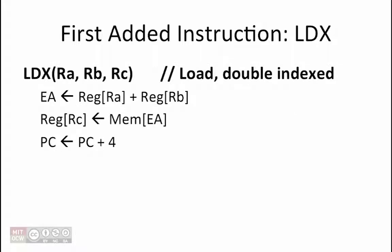The first instruction that we want to add to our beta is an LDX instruction, which is a load that is double indexed. In order to produce the effective address of the load, instead of adding the contents of a register to a constant as is done in the load instruction, we add the contents of two different registers. So the address for this load operation is the result of adding together the contents of registers RA and RB. The contents of the memory location pointed to by this effective address are loaded into register RC. Finally, the PC is incremented by 4 to point to the next instruction.